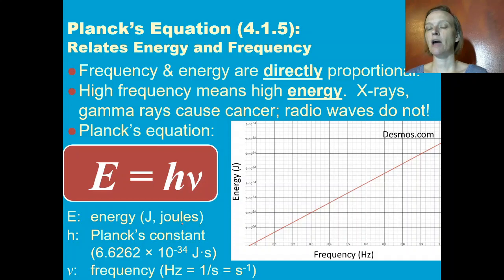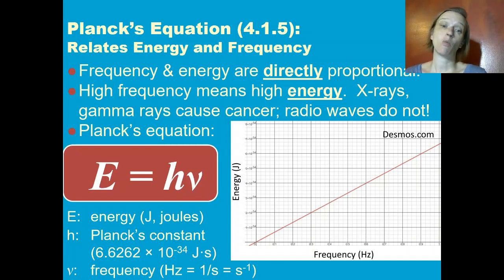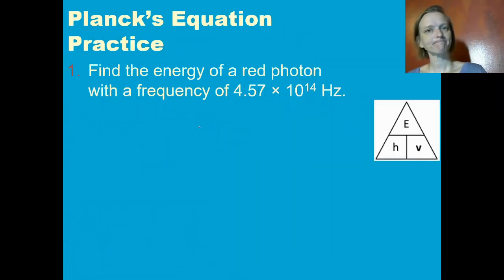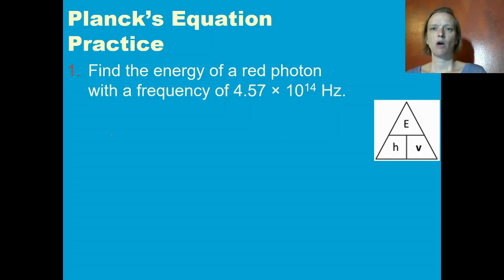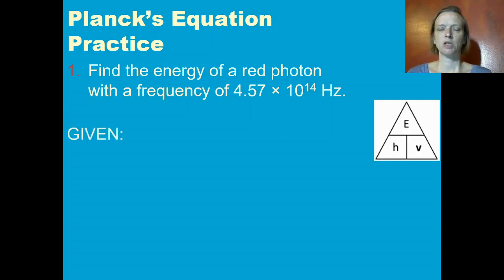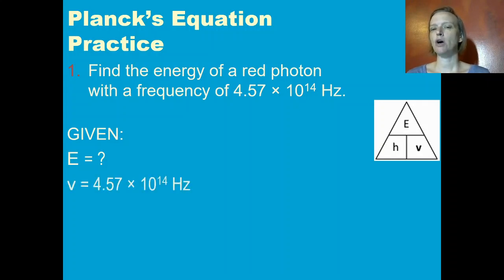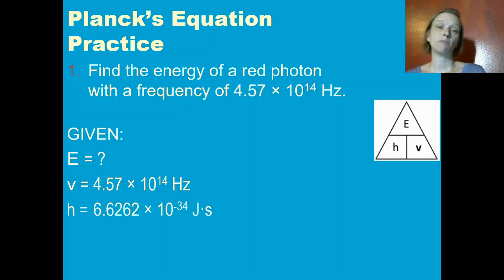Let's look at how we use this equation to calculate the energy of a given frequency of light. Example 1: Find the energy of a red photon, which has a frequency of 4.57 times 10 to the 14th hertz. We're trying to figure out energy, but we know the frequency and Planck's constant.